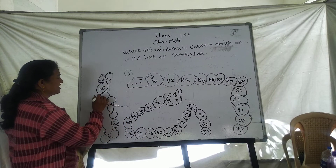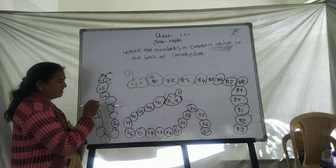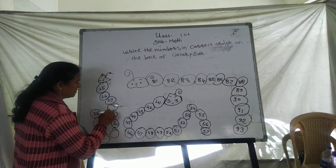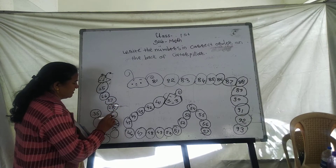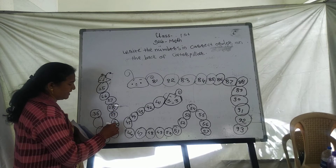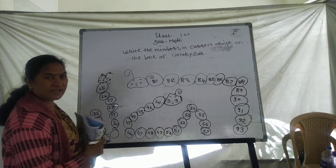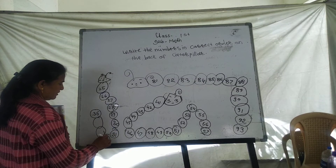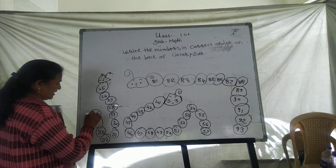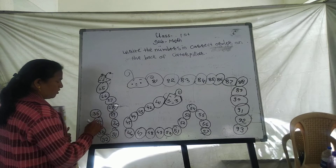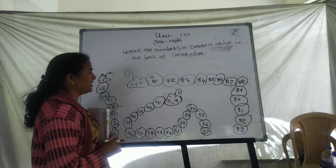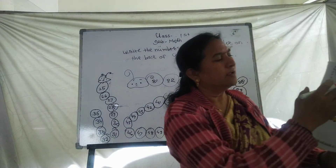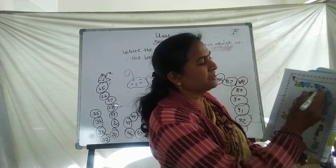25, 26, 27, 28, 29 and 30. Next, 31, 32, 33, 34 and 35.